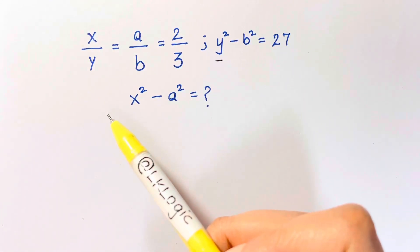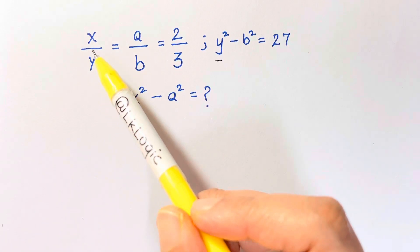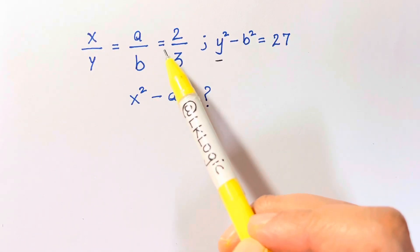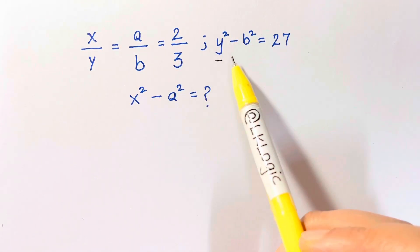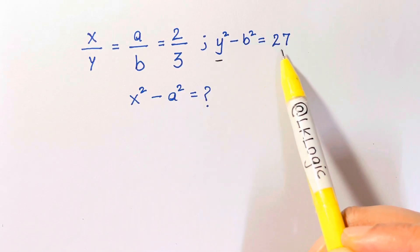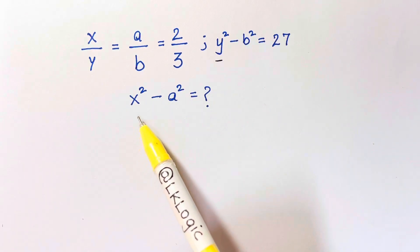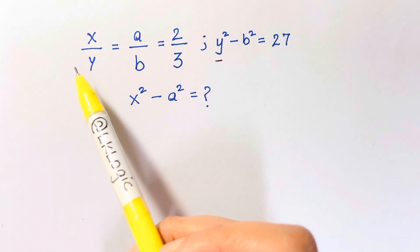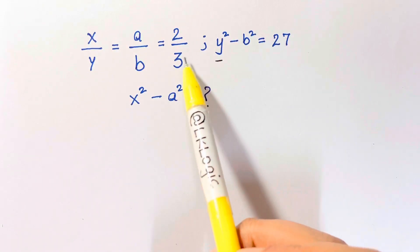Hi guys, I'm back with another math olympiad question for you all. It's very interesting. Here we have x over y equals a over b equals two thirds, and we are also given y square minus b square equals 27. So we have to find the value of x square minus a square.